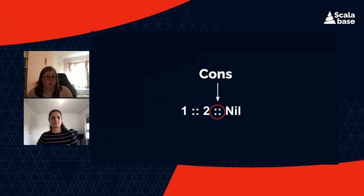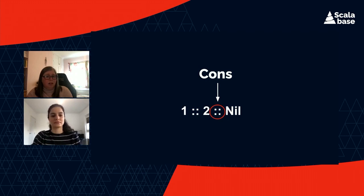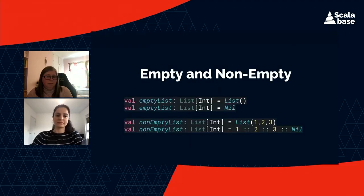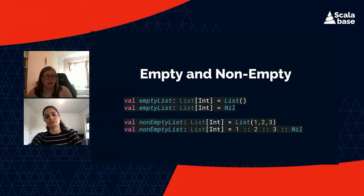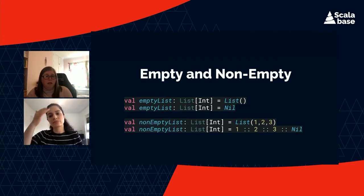The cells are called cons. Cons is a term from the language Lisp, and for the purpose of this talk, all we need to know is cons is an operator on the list object, meaning a list with a head and a tail. It is denoted by a double colon. An empty list can either be a list with empty parentheses or the word nil. A non-empty list can look like list(1, 2, 3), or using the cons operator. It's good to know what these look like when reading Scala functions.